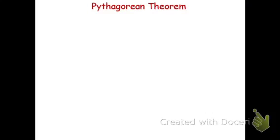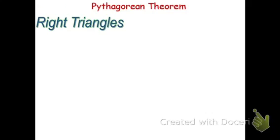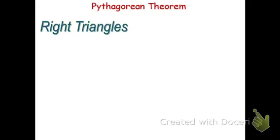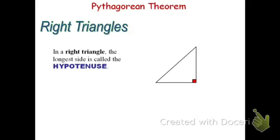In this video, we'll review the Pythagorean Theorem. Let's start by learning some of the vocabulary for right triangles. In a right triangle, the largest side is always called the hypotenuse.